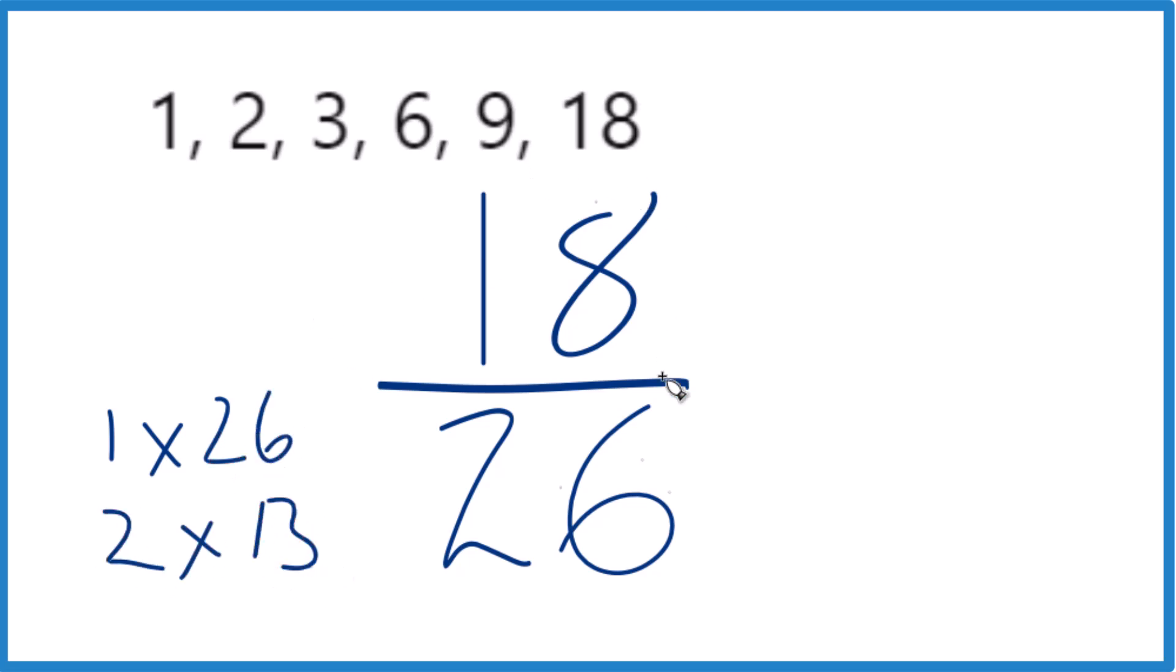So we're looking for the greatest common factor, that's the whole number that goes into both 18 and 26 evenly. And it looks like the greatest common factor is gonna be two.